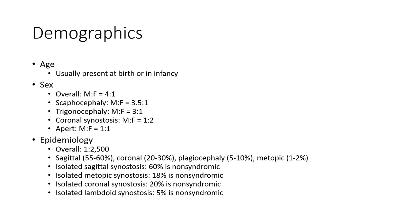Epidemiology: Overall incidence is 1 in 2,500. By suture: sagittal 50–60%, coronal 20–30%, lambdoid 5–10%, metopic 1–2%. Isolated sagittal synostosis is 60% non-syndromic, isolated metopic synostosis 18% non-syndromic, isolated coronal synostosis 20% non-syndromic, and lambdoid synostosis 5% non-syndromic.